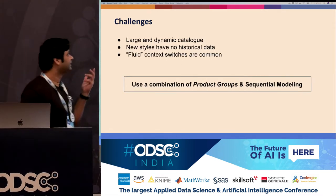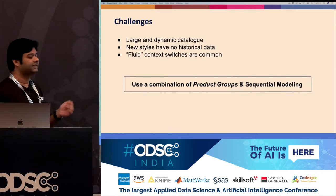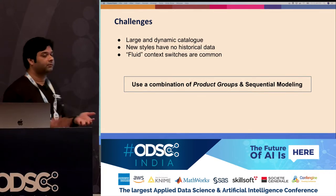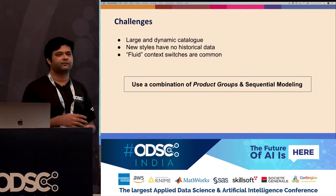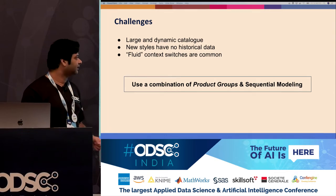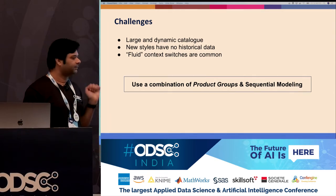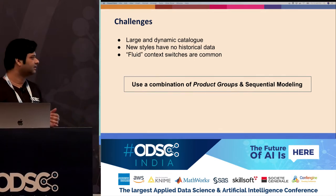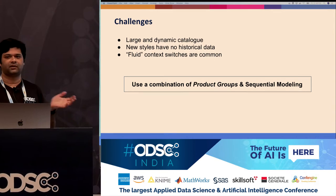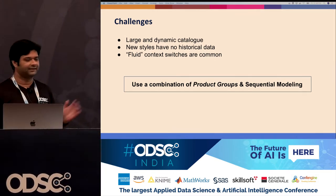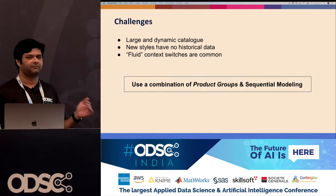The challenges we already saw: the catalog is large and dynamic, new styles get added daily with no historical data. On top of this, there are a lot of context switches. To solve these problems together, we use a combination of what we call product groups — I'll talk about that in a minute — and sequential modeling to capture the context switches.